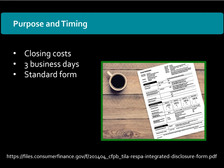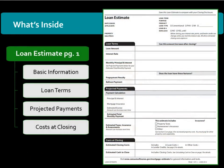CFPB requires all lenders to use the same standard loan estimate form. Let's take a quick look at what's inside the three-page loan estimate. The first page contains basic information such as the borrower's name, address of the property, and sales price or appraised value.